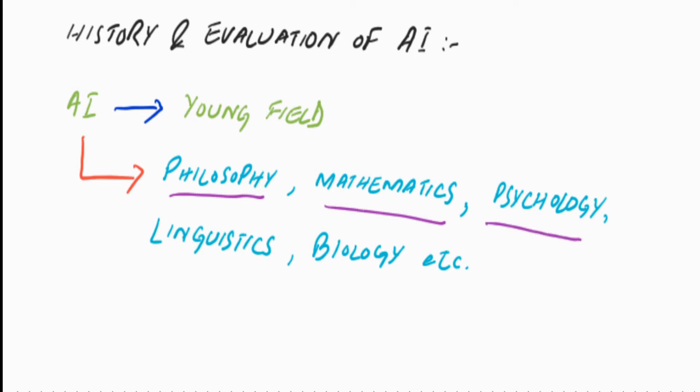From psychology, we have the tools and techniques to investigate the human mind and ways to represent the resulting theories. Linguistics provides us with theories of structure and meaning of language. From biology, we have information about the network structure of the human brain and theories on functionalities of different human organs.